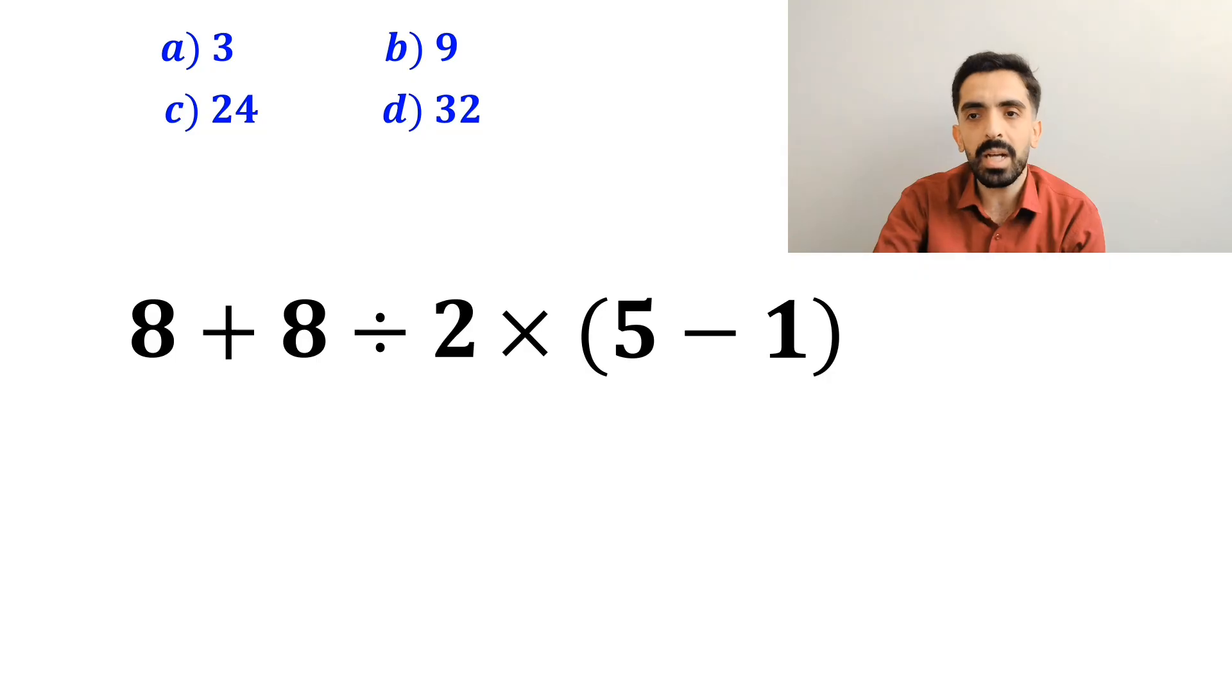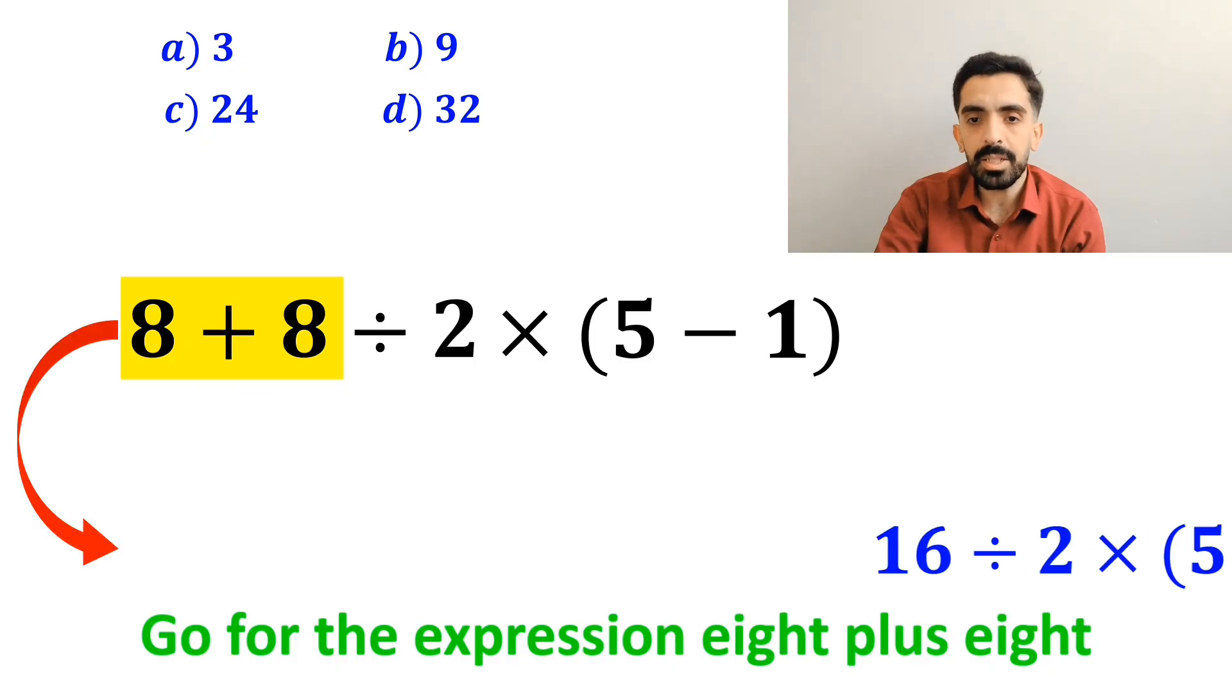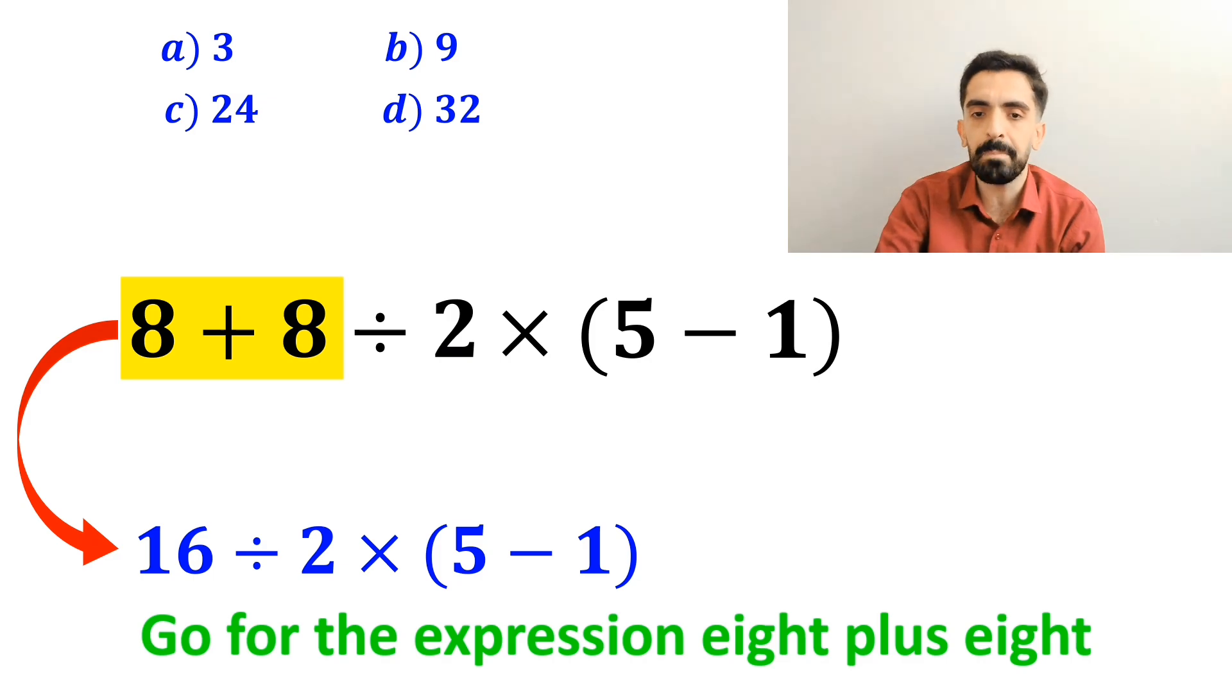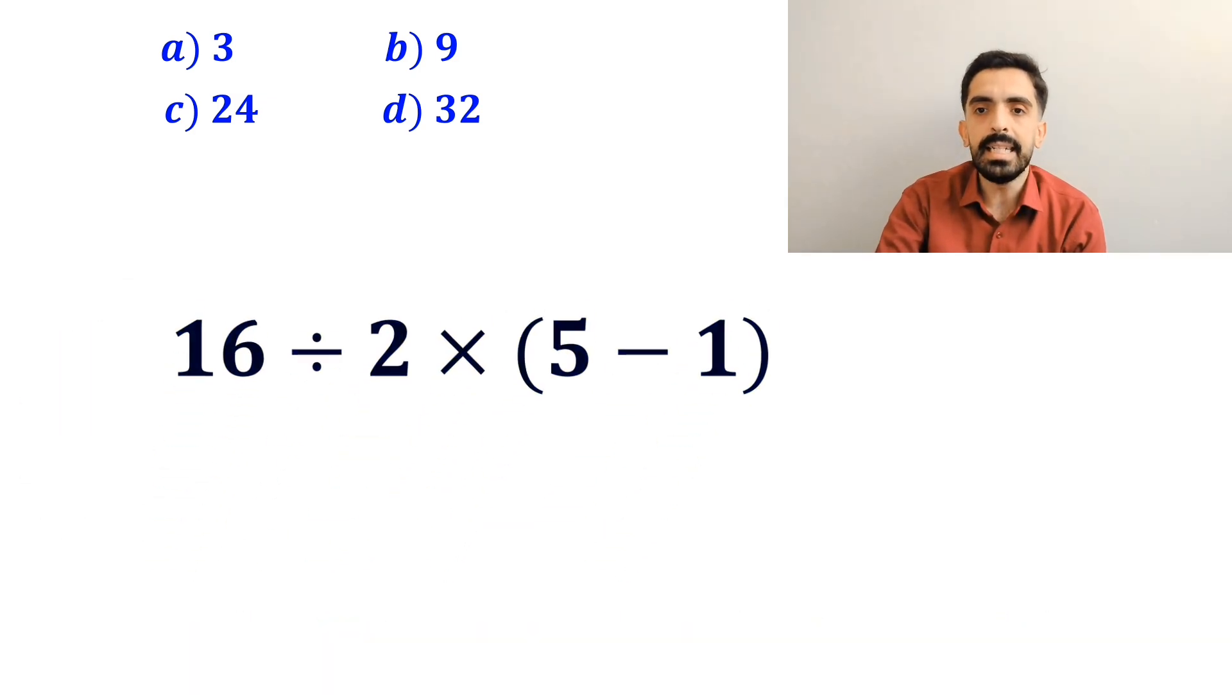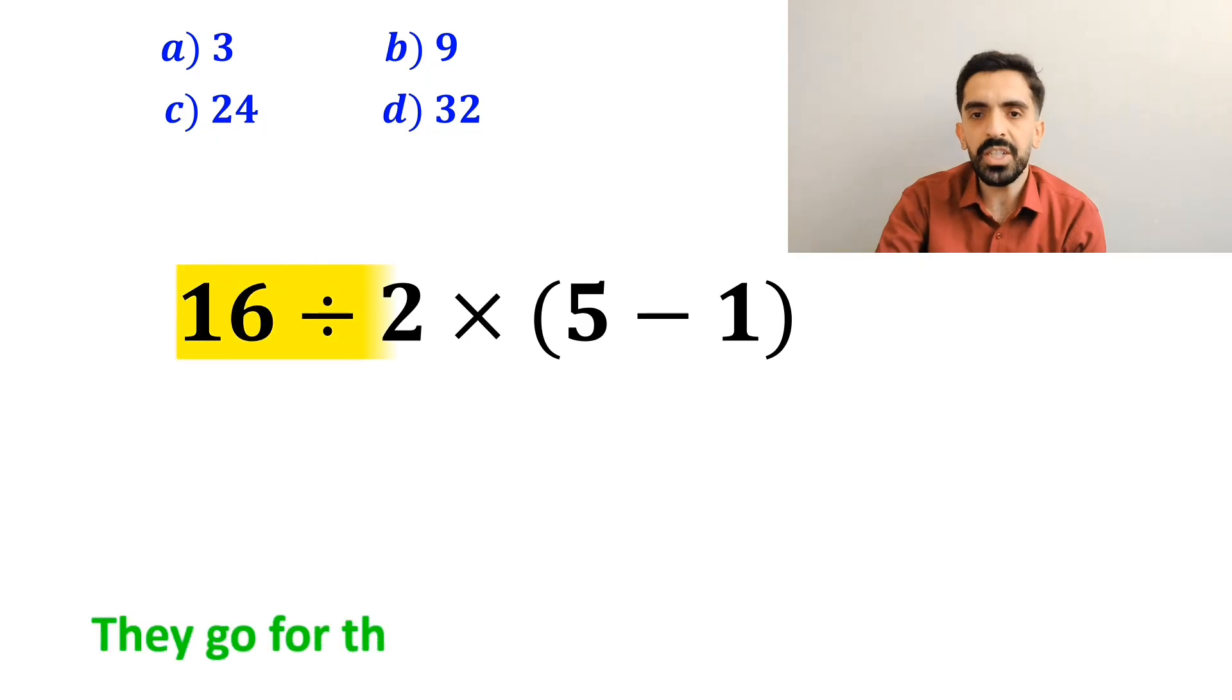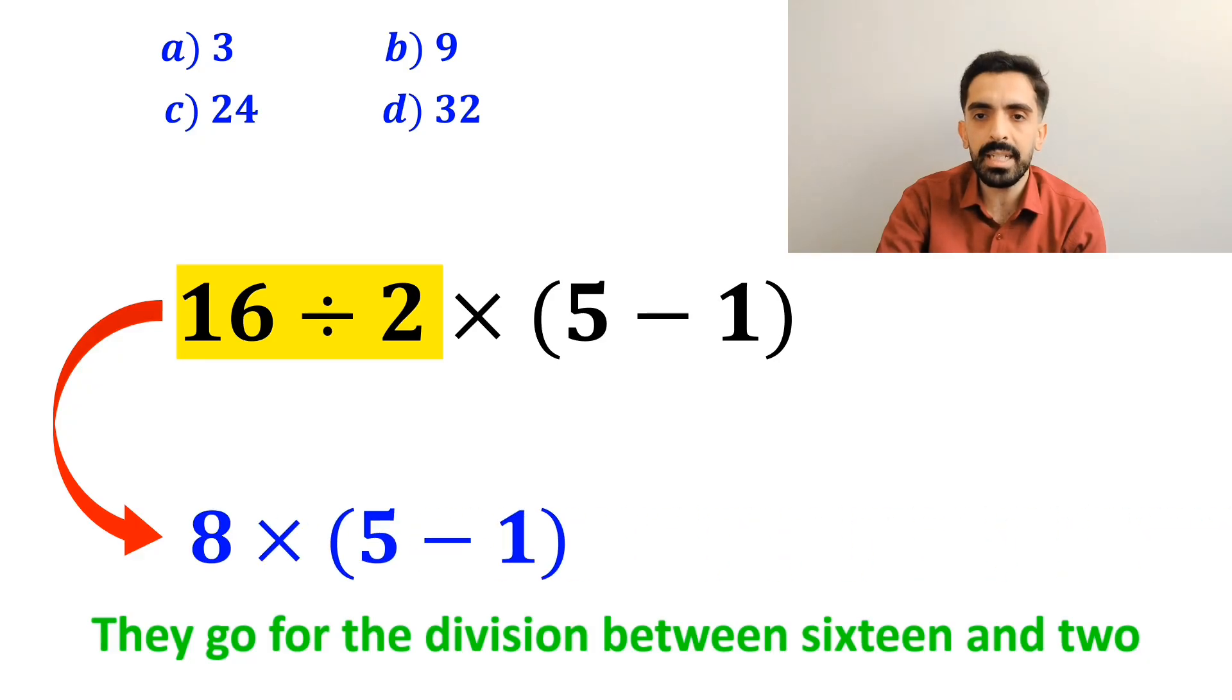Let's dive in and break it down step by step together. Many people when solving this question first go for the expression 8 plus 8 and write this expression as 16 divided by 2 times 5 minus 1 inside the parenthesis. In the next step, they go for the division between 16 and 2, and this expression simplifies to 8 times 5 minus 1 inside the parenthesis.